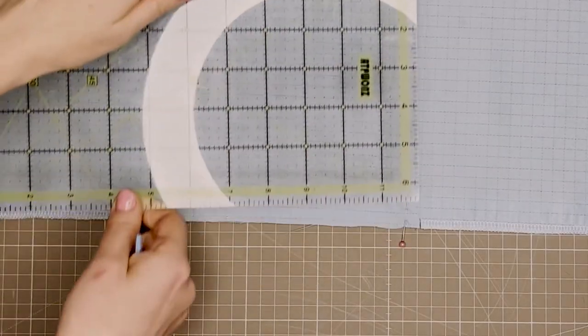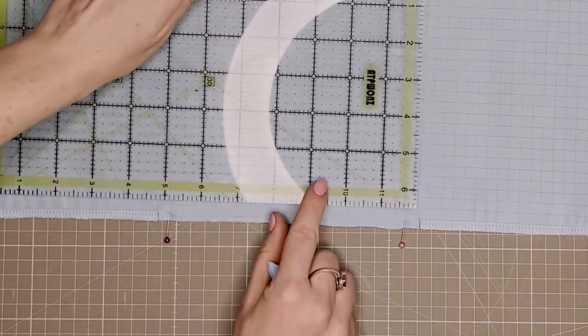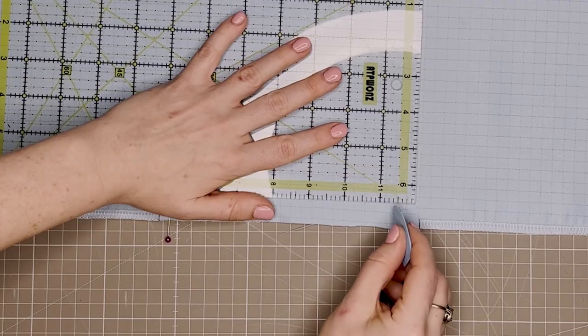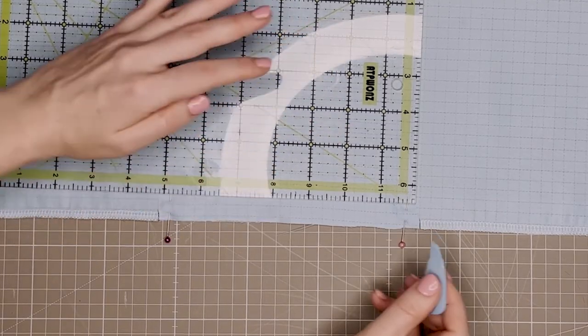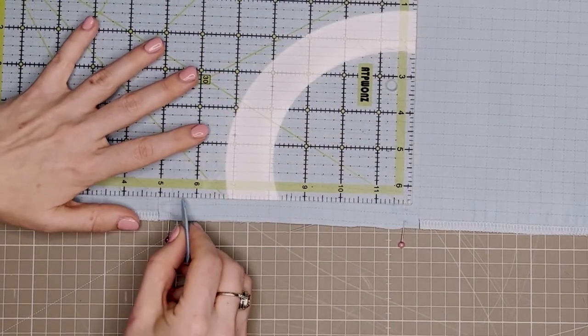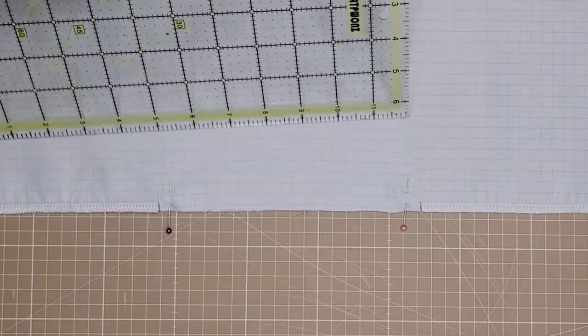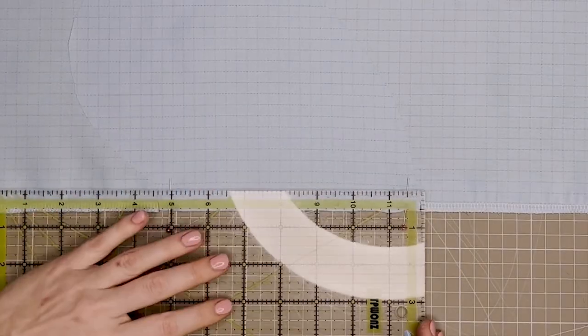We're going to sew a box within this area. Mark a place 5/8 from the pocket notch on both sides, then join these two points together at the 5/8 seam allowance from the straight edge.